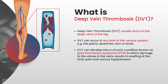Rebecca is now going to talk us through what a DVT is. A deep vein thrombosis usually occurs in the deep veins of the leg; however, it can occur in any part of the venous system — for example, the pelvis, abdomen, arm, or even brain. A DVT can develop into a chronic condition known as post-thrombotic syndrome, in which damage to the valves in the veins results in swelling of the limb, pain, and venous hypertension.